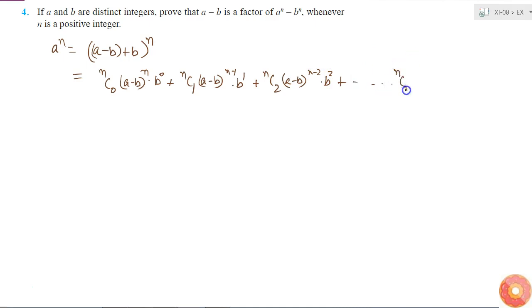...nC(n-1) times (a-b) times b power n-1, plus nCn (a-b) power 0 which is 1, times b power n, right?